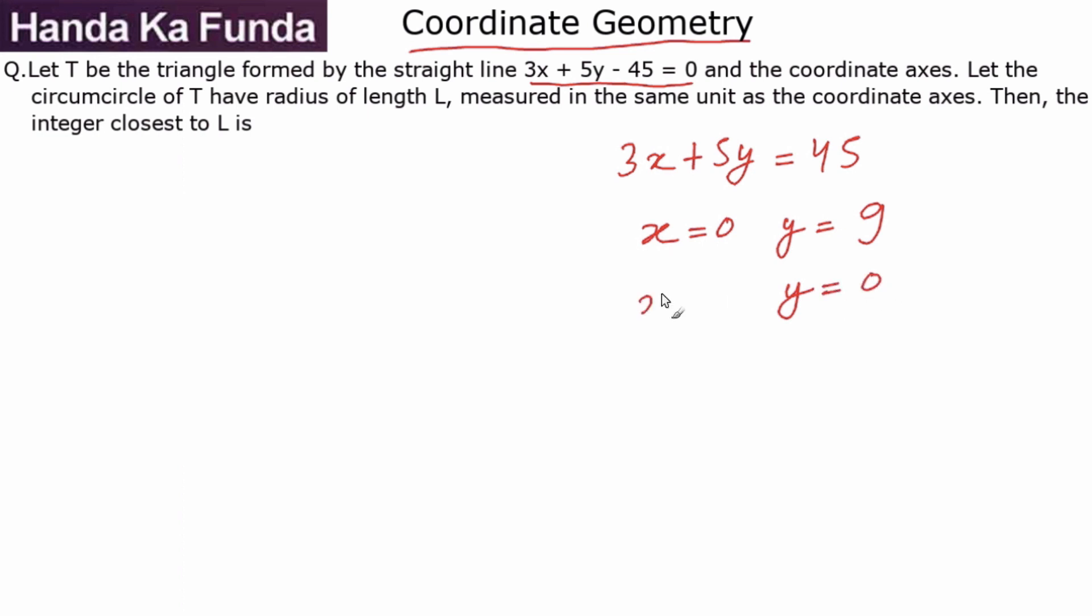On the other hand, when I put y equal to 0, what is the value of x? y is equal to 0, so 3x is 45, or x is 15. As you notice, both of these are positive values, that means my triangle would look something like this.